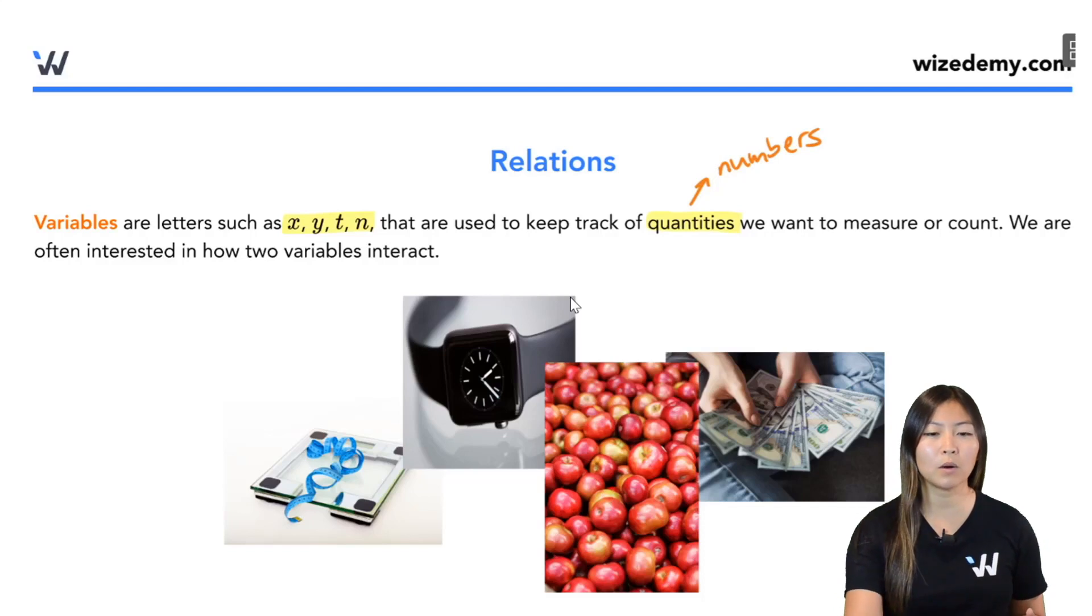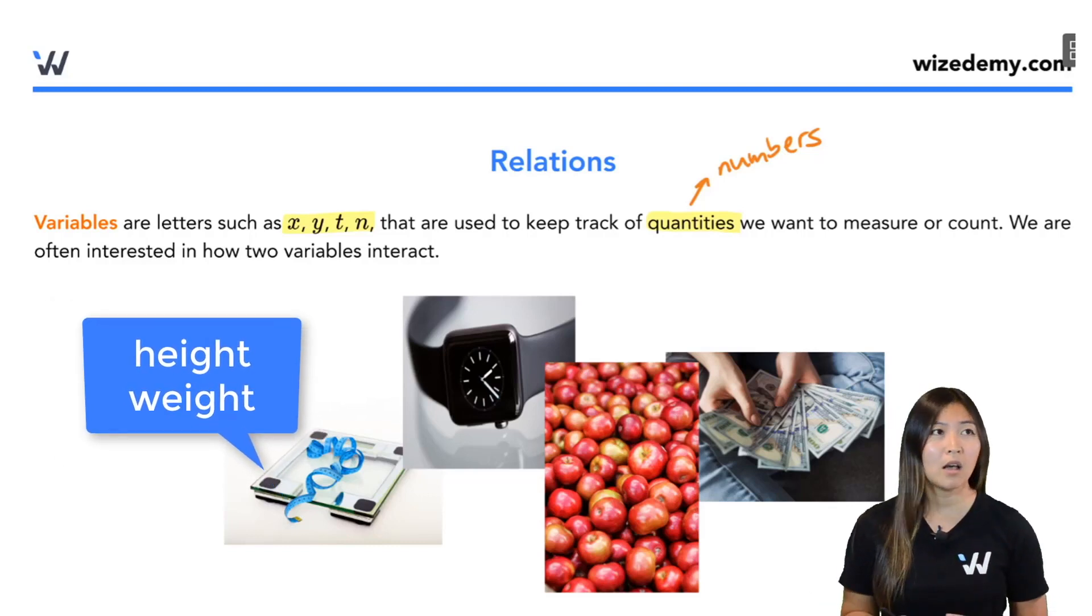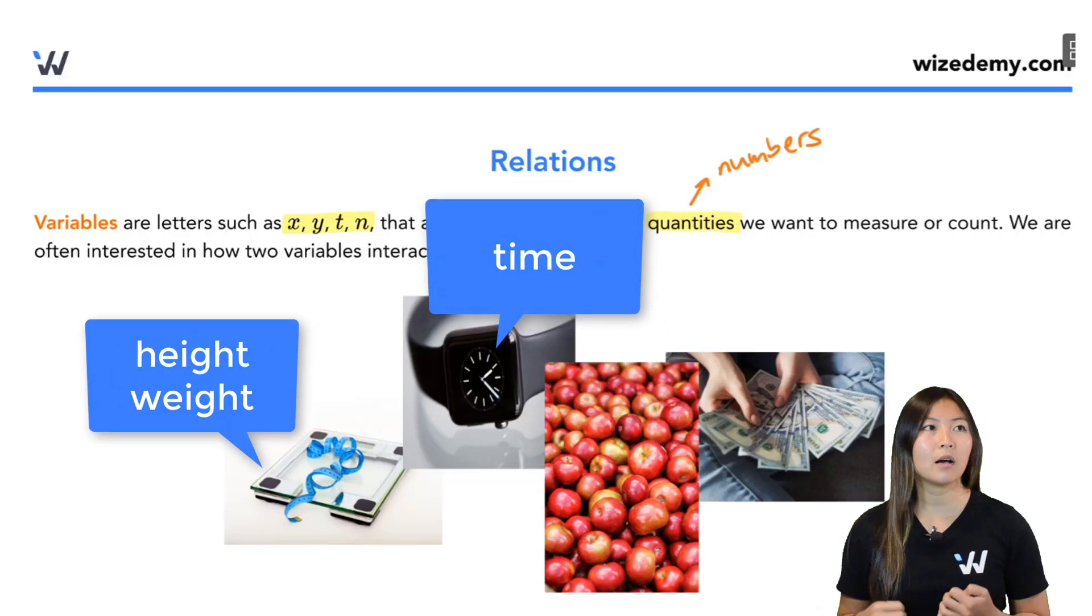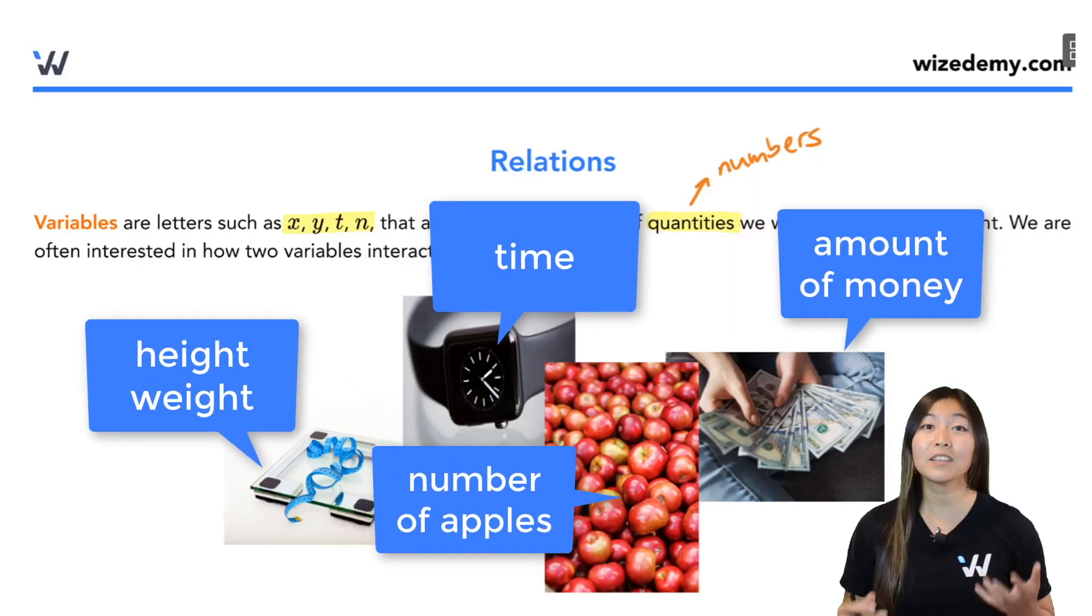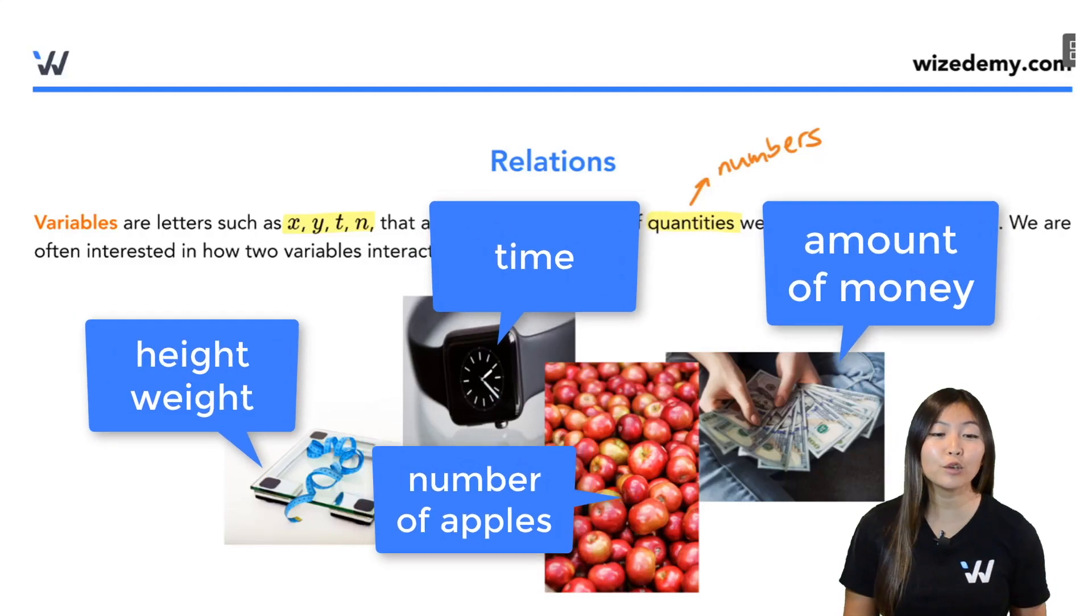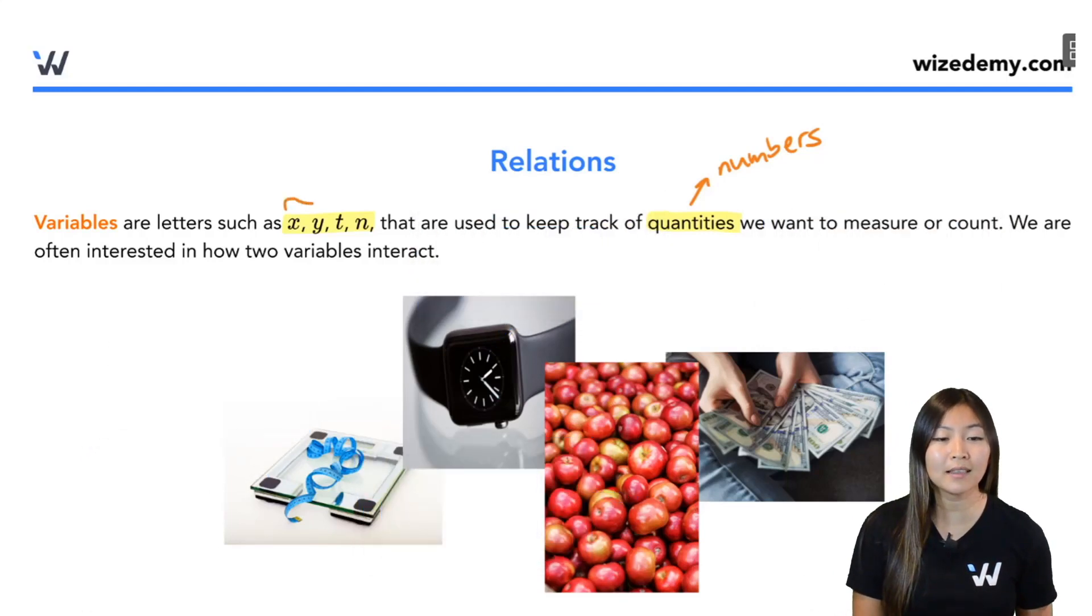And what are we keeping track of? Well, we're keeping track of numbers that we are interested in measuring or counting. For example, if you're interested in measuring someone's height, someone's weight, how quickly they can run, count the number of apples in a supermarket, or if you want to count money, these are all quantities and we can use variables to represent these quantities.